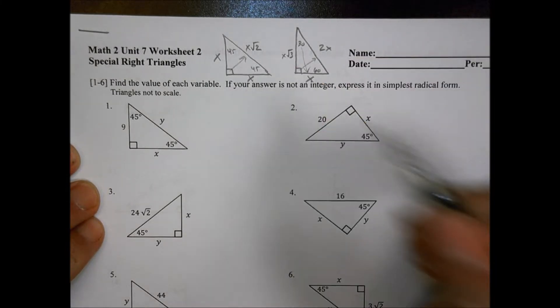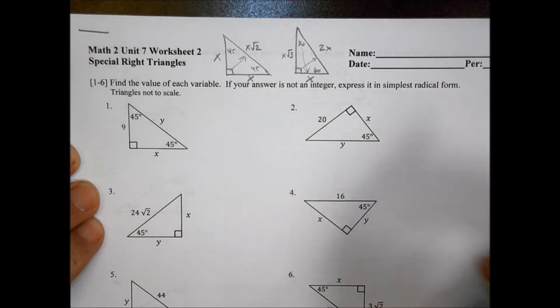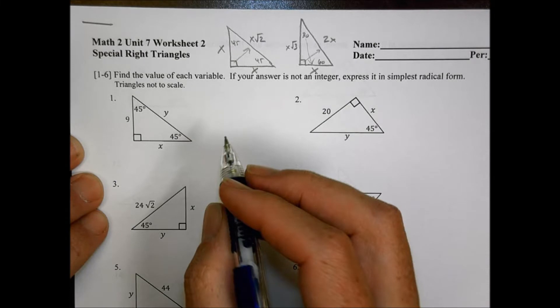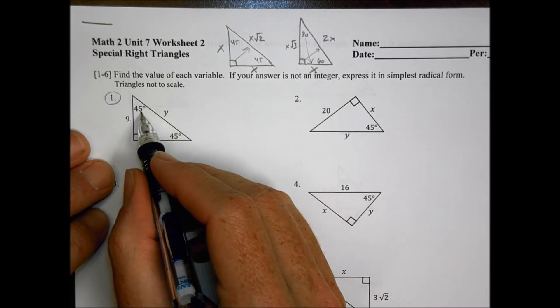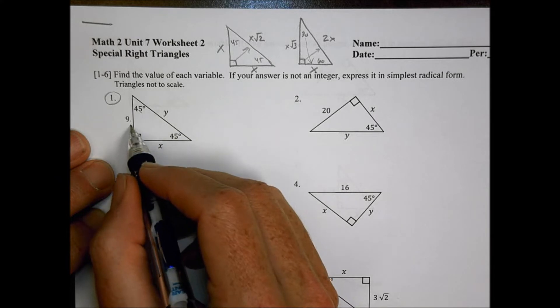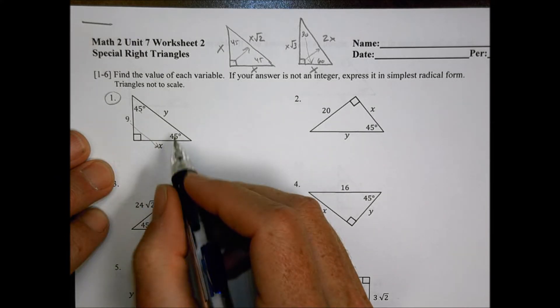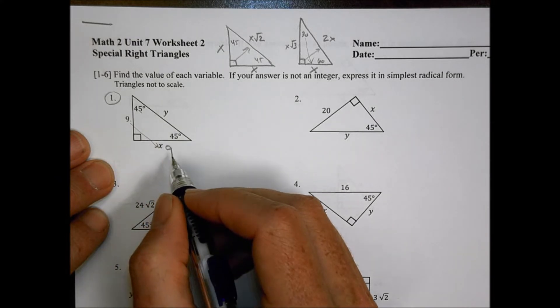The first page is dealing with the 45s, and the second side deals with the 30-60. Let's take a look at number 1. We have a 9 right here, we can see it's a 45-45. And so our other value over here, X, is going to be equal to 9, and that's what that one will be.